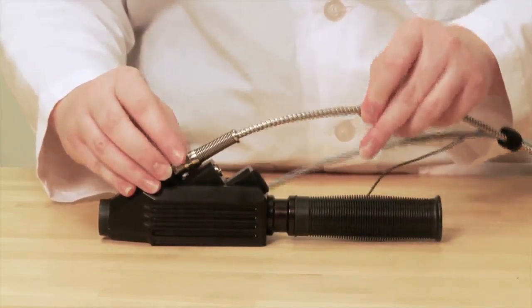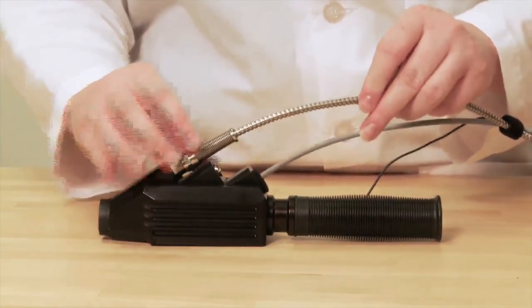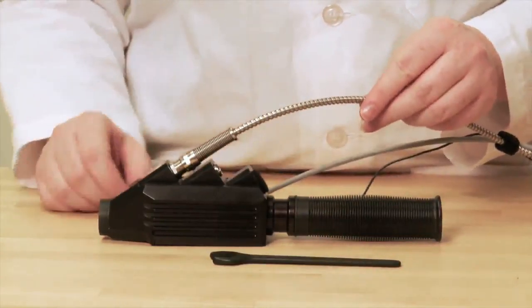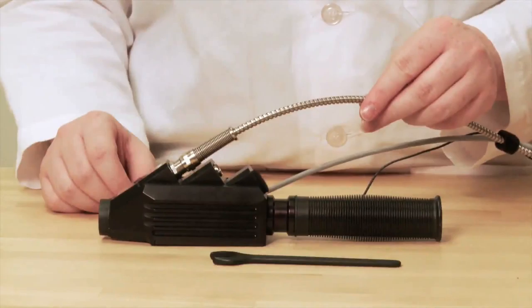If the fiber optic cable feels loose after hand tightening the metal strain relief sleeve, use the wrench provided to firmly tighten the metal strain relief. If you have a PVC cable, be cautious to not over tighten.